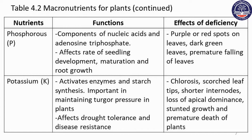Potassium is a cofactor of enzymes, including starch synthesis. It is important in maintaining turgor pressure in the plant. Potassium is also important for drought tolerance and disease resistance.